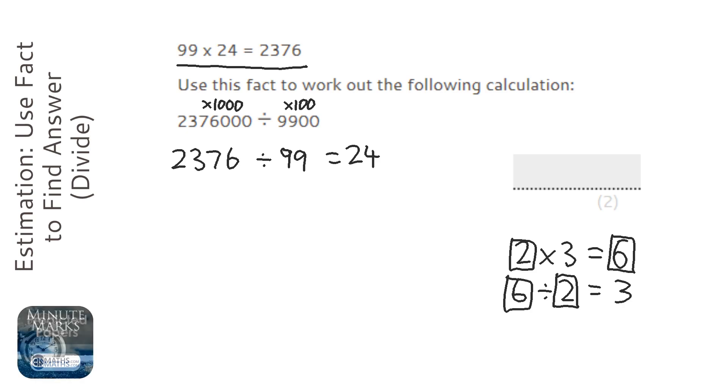So one way of doing this is just to split that 1,000 up by times 10 times 10 times 10, and 100 times 10 times 10. So this times 10 will cancel. This times 10 will cancel. And we're just left with an answer that is 10 times bigger. So we've got the answer of 24 with a zero on the end of it.